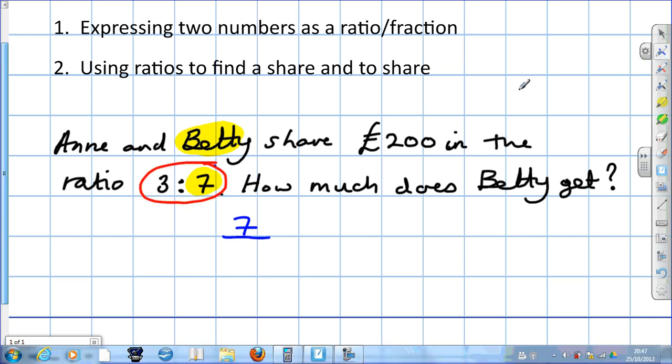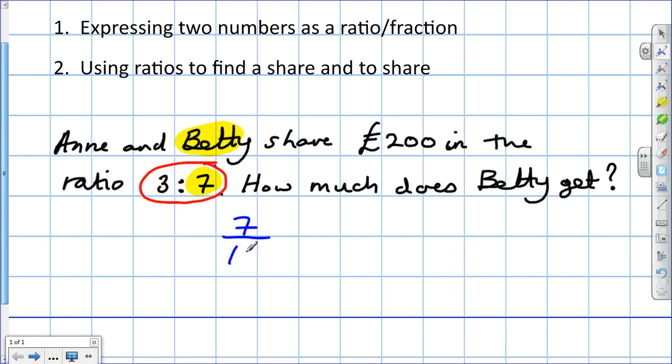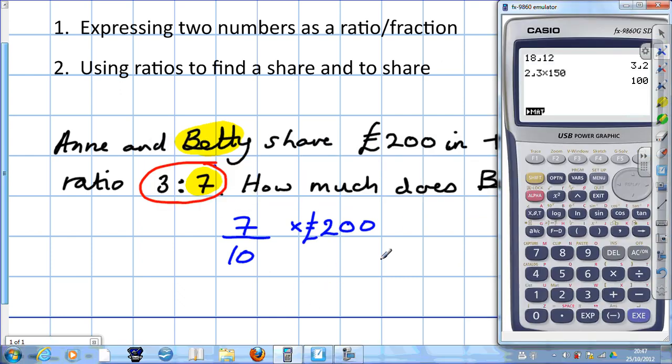And then what number haven't we used? It's the 200. Get our calculator out. So it's 7 over 10, that's the total shares because we know the total amount, times 200 equals 140. Betty gets 140.